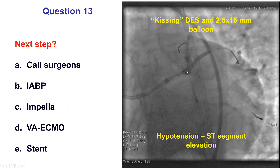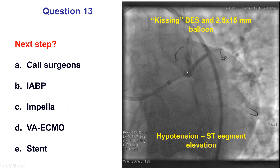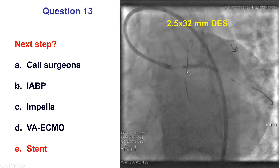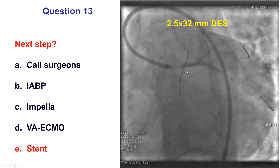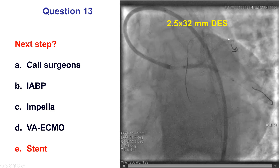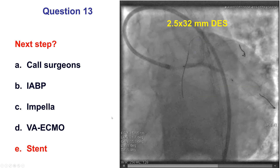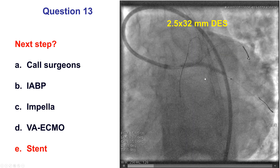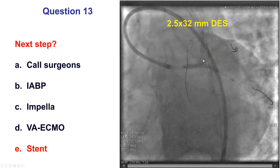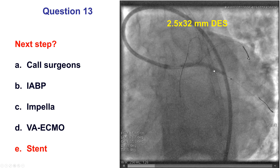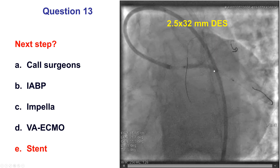The patient developed chest pain, hypotension, and ST-segment elevation. The reason was losing the circumflex — acute vessel closure. Fortunately, we did have a jailed wire into the circumflex, highlighting the importance of having a jailed wire into that vessel.